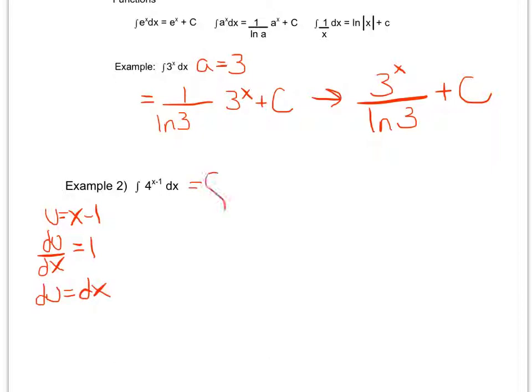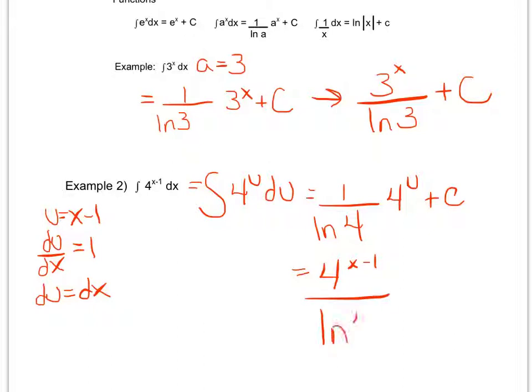This becomes the integral of 4 to the u du. So now following my formula, that gives me or that integrates to be 1 over ln of 4, because my a is my base, times 4 to the u plus c. Taking a final step to place x minus 1 back in for u, I get 4 to the x minus 1, since 1 times 4 to the u up here is just 4 to the u, over ln of 4 plus c.